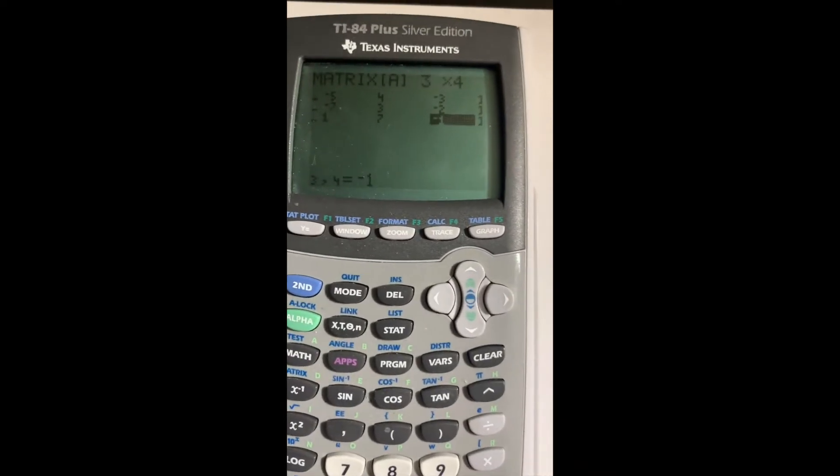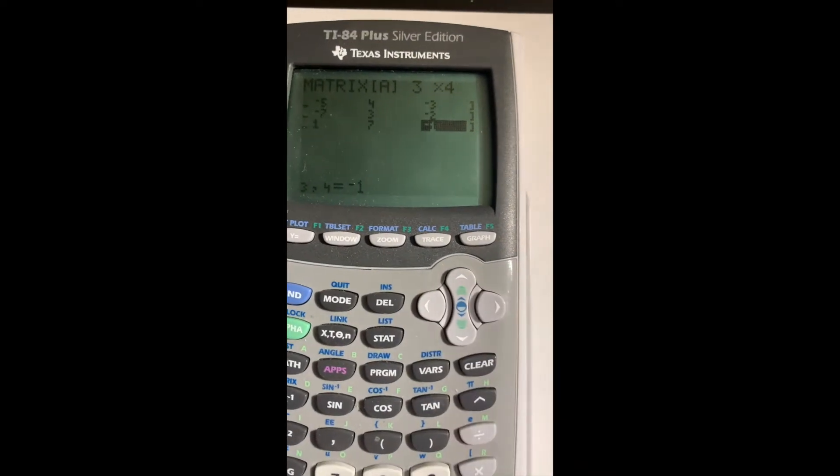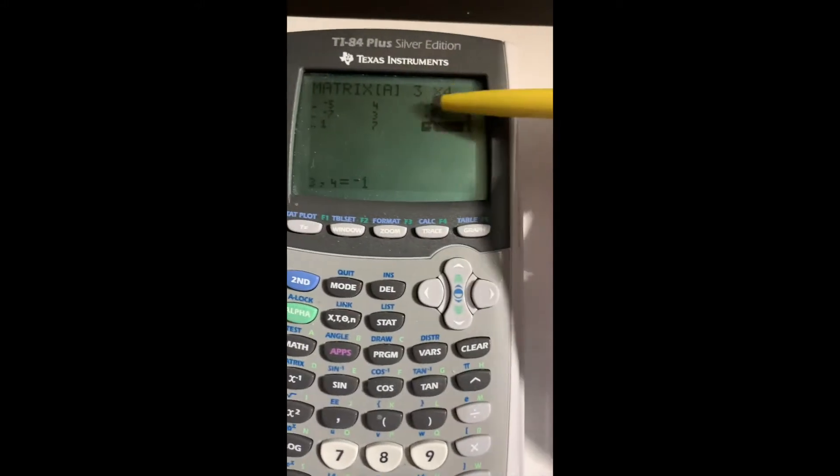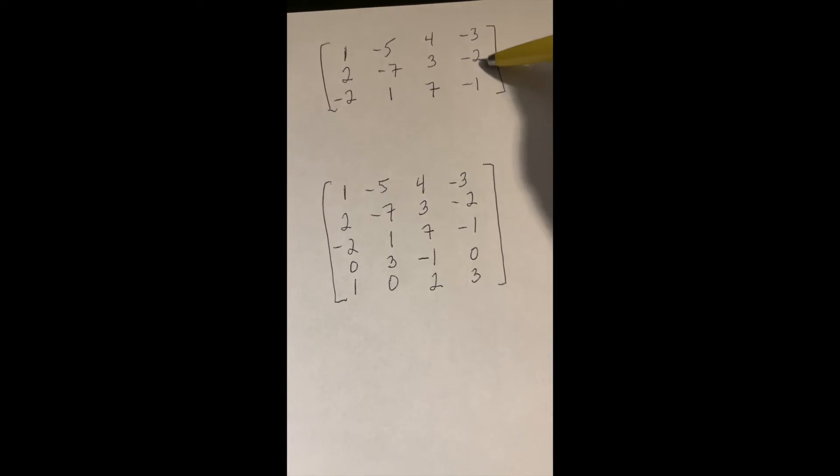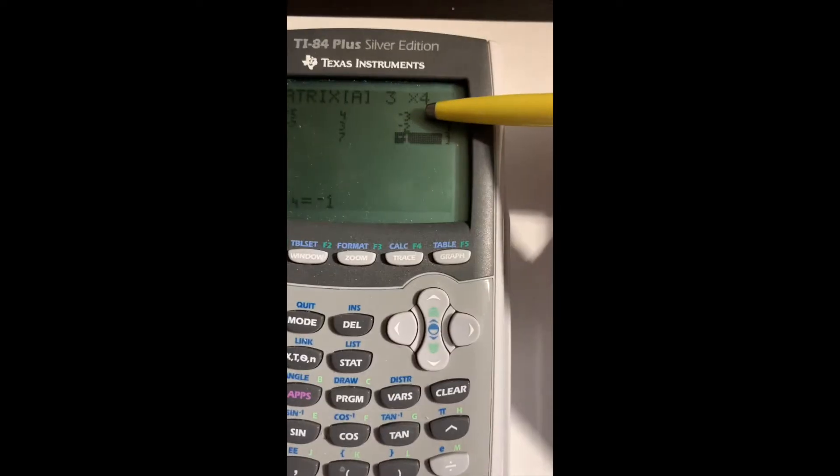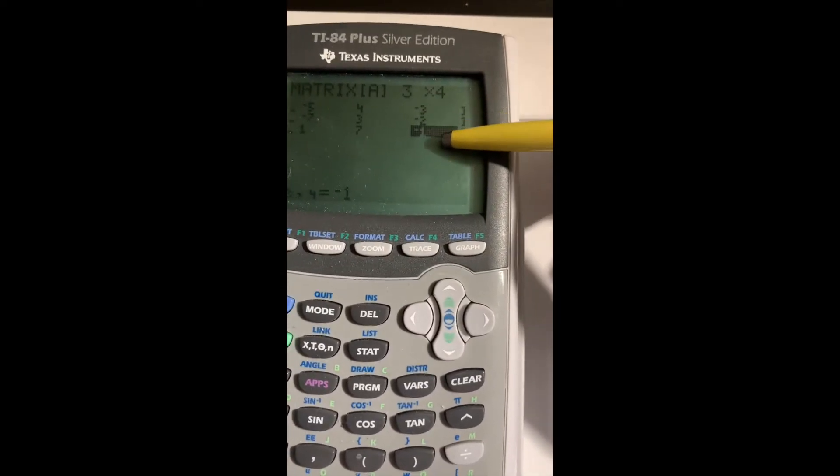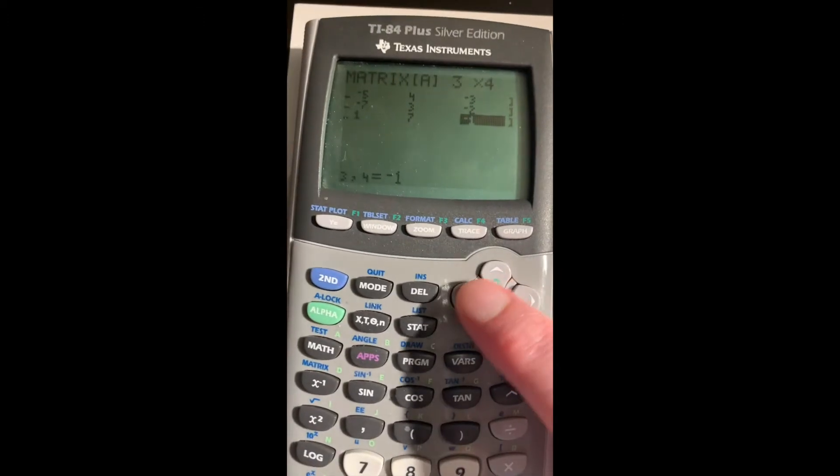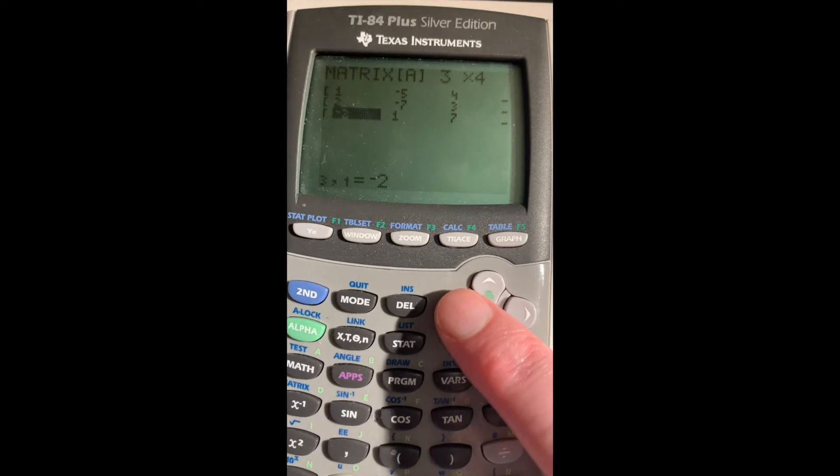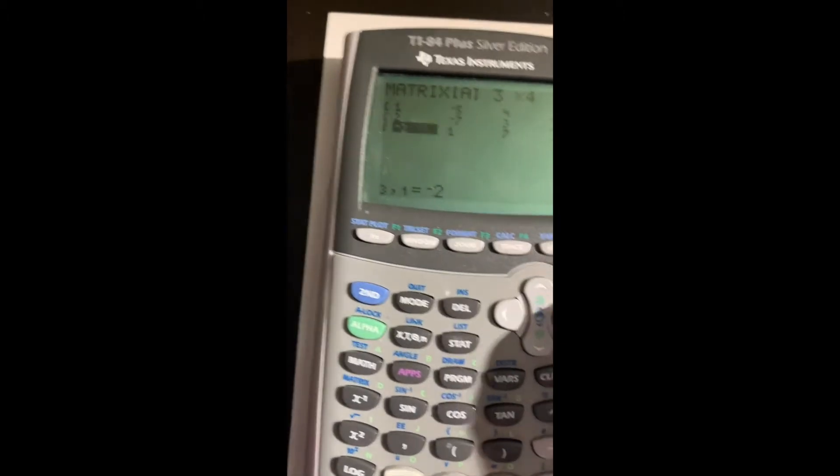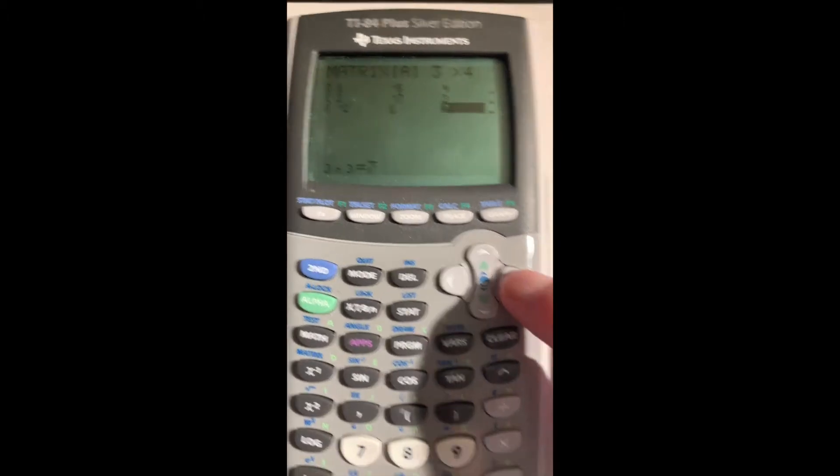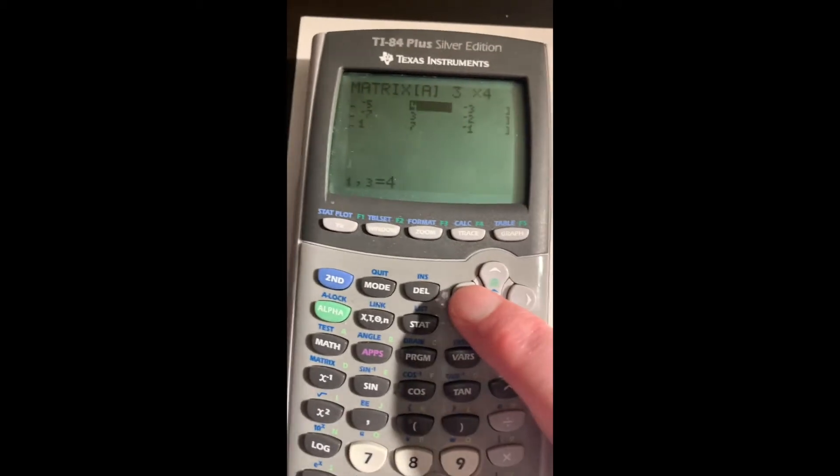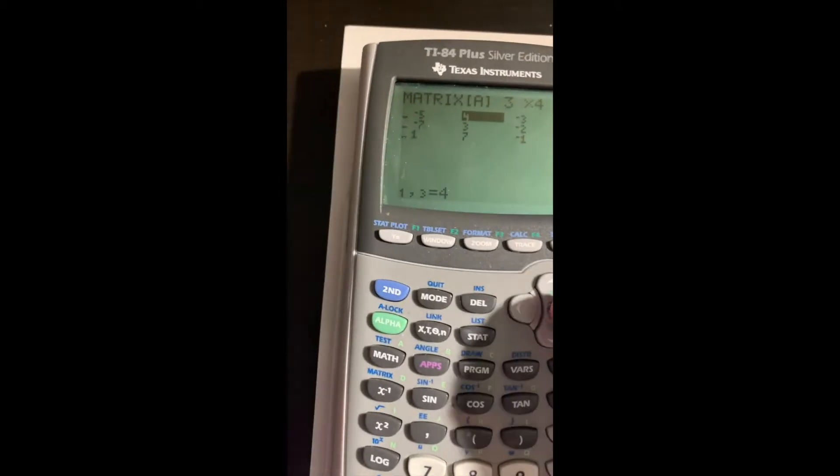I like to double check that I got the numbers in correctly. Since I entered them in as rows, I like to double check the columns. The last column should be minus 3, minus 2, minus 1. The next one 4, 3, 7, etc. If you made a mistake somewhere, just use these arrow buttons, move the cursor onto the number you want to change and type a new number.